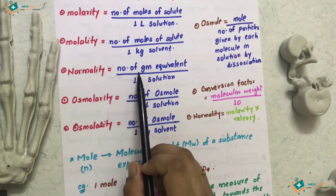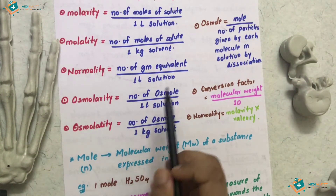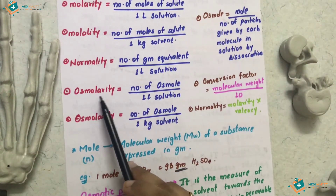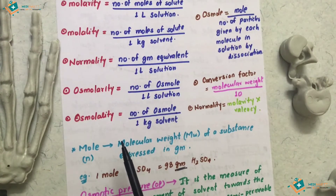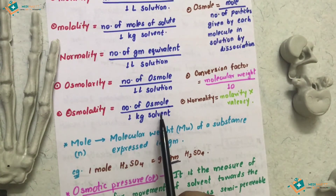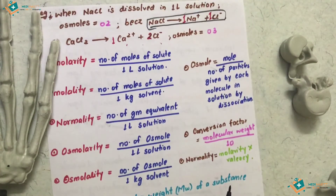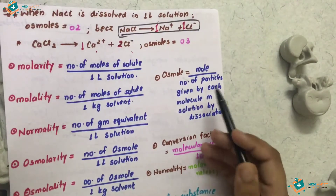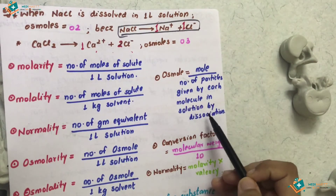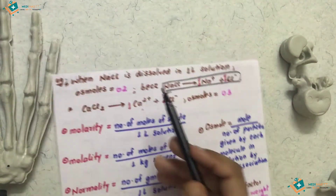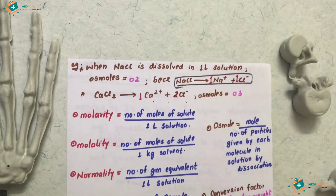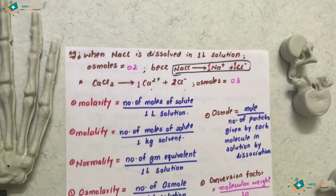Normality is the number of gram equivalents of solute per 1 liter of solution — gram equivalent equals moles divided by valency. Osmolarity is the number of Osmol per 1 liter of solution. Osmolality is the number of Osmol per 1 kilogram of solvent. The Osmol formula is: moles multiplied by the number of particles given by each molecule in solution through dissociation.